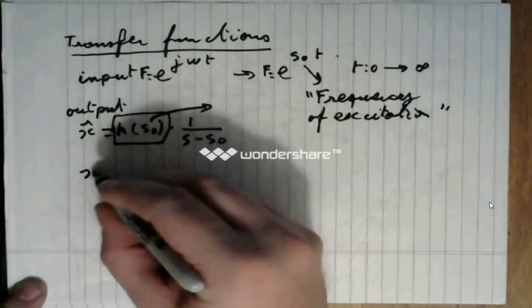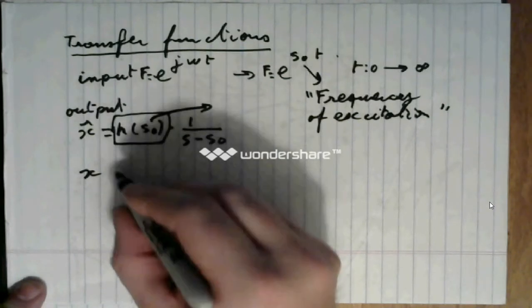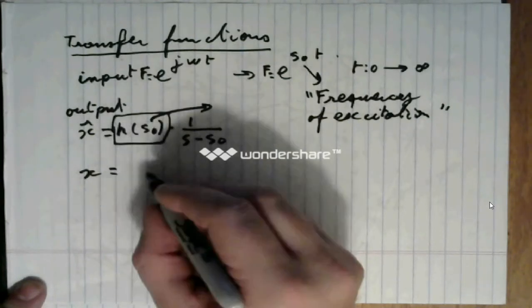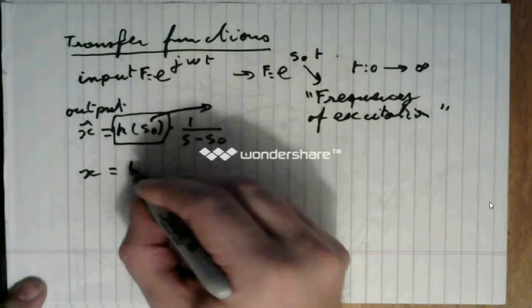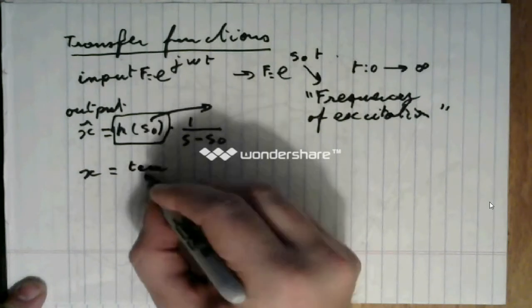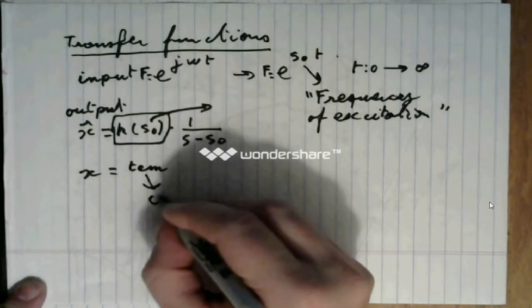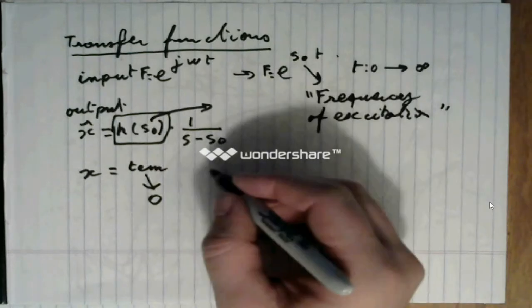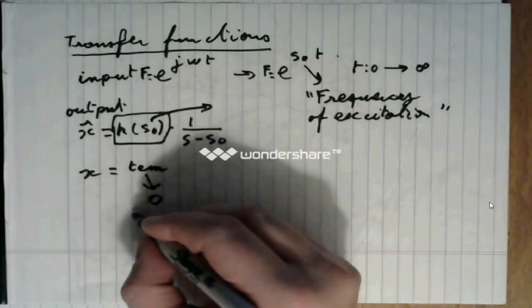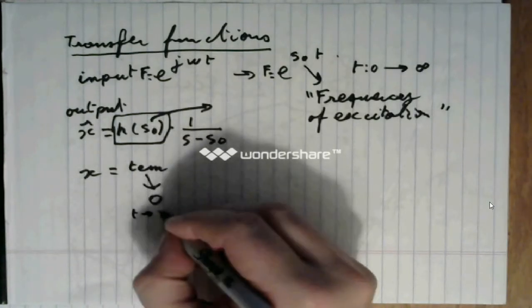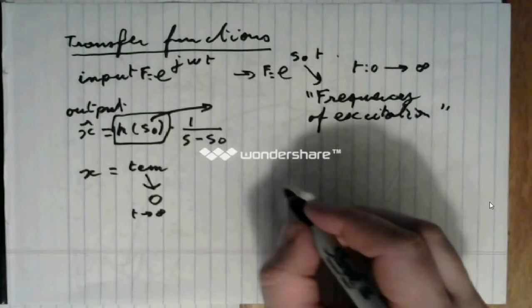Now, x will be made of two terms. A term that goes towards zero, provided the system is stable, and of course, that is as time turns towards infinity.